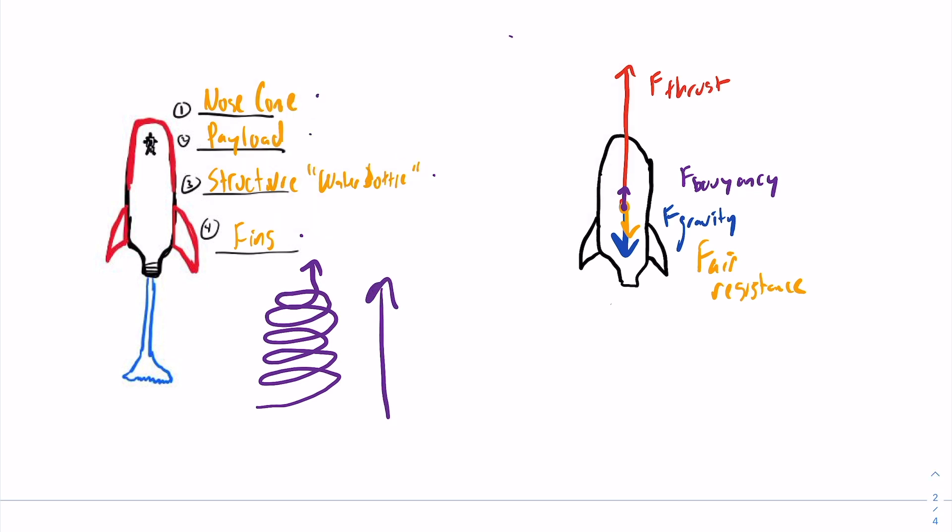In terms of looking at the forces on our rocket, we have four different forces. We have thrust, we have a small force of buoyancy upwards, downwards we have gravity, and finally we have the force of air resistance, which always goes against the direction of motion.